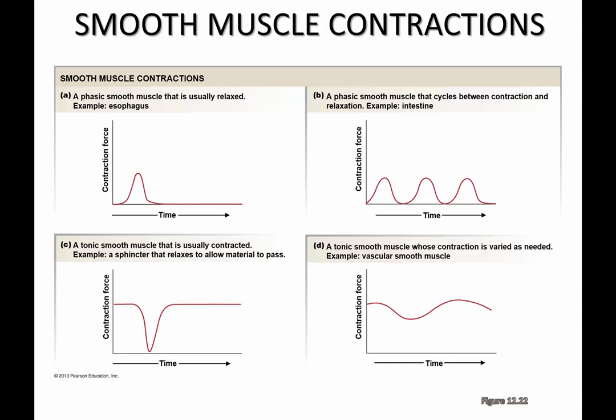These are examples of phasic and tonic smooth muscle contraction force, with contraction force versus time on each graph. A simple phasic smooth muscle is relaxed most of the time, as shown for this esophageal muscle, and then it contracted and relaxed again. You can imagine that if you swallow something, the muscle will contract to push it down into your stomach, and after the food has passed that section of the esophagus, the muscle can relax again.